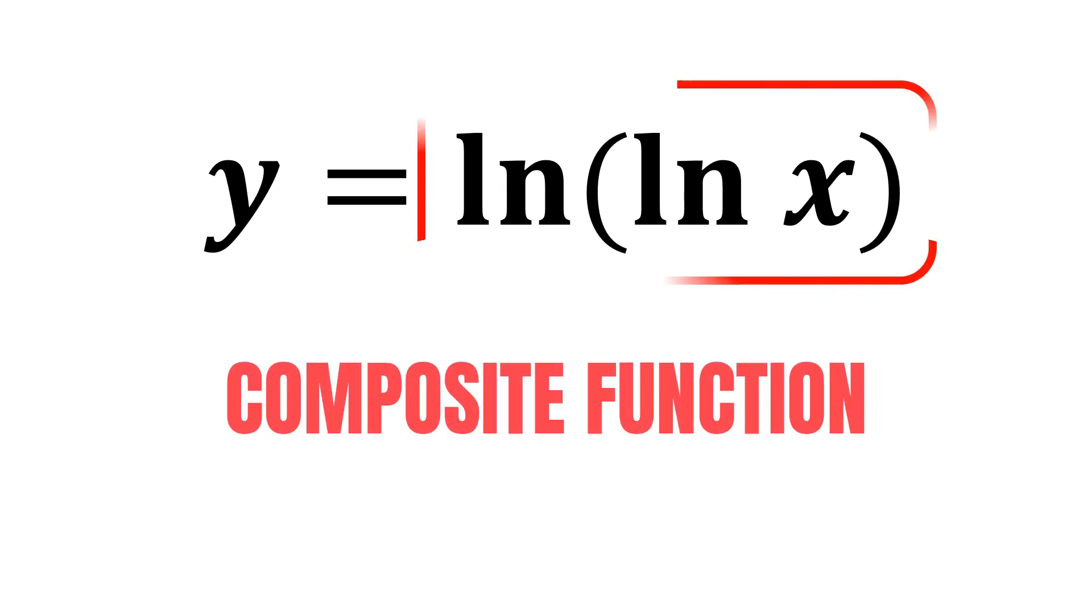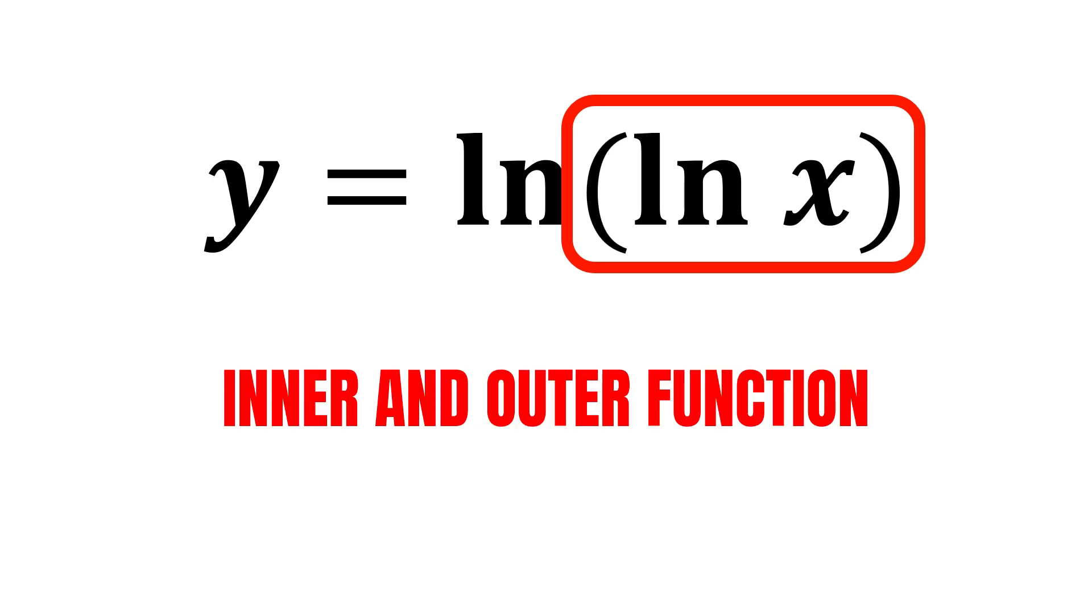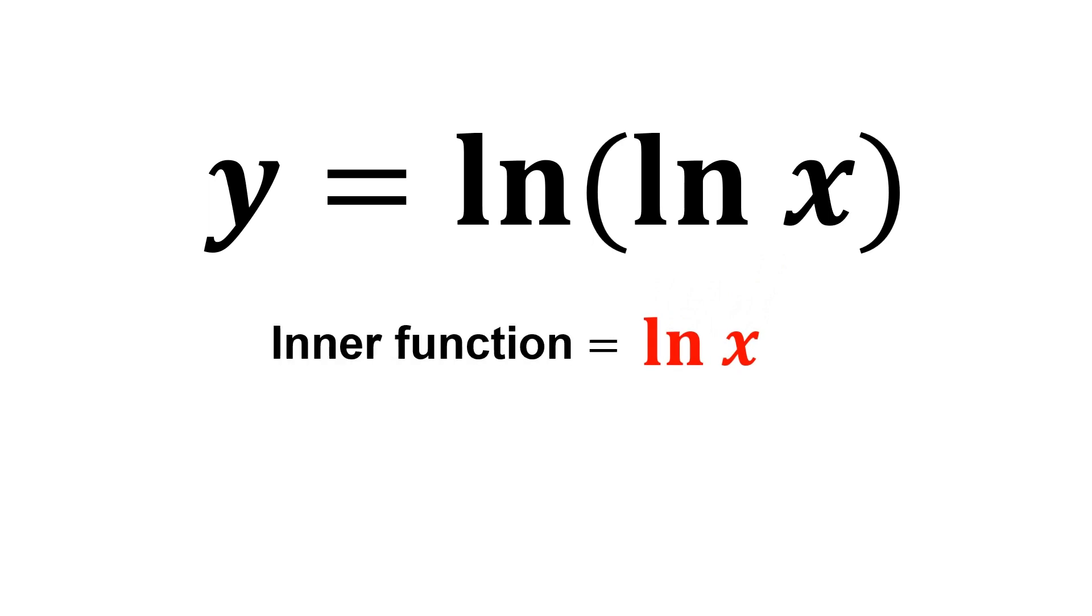But did you notice that this is actually a composite function? Suppose that we have x inside the brackets, but now we have ln x instead. Therefore, we can separate it into inner and outer function, where this ln x will be our inner function, and the whole function will be our outer function in terms of x.